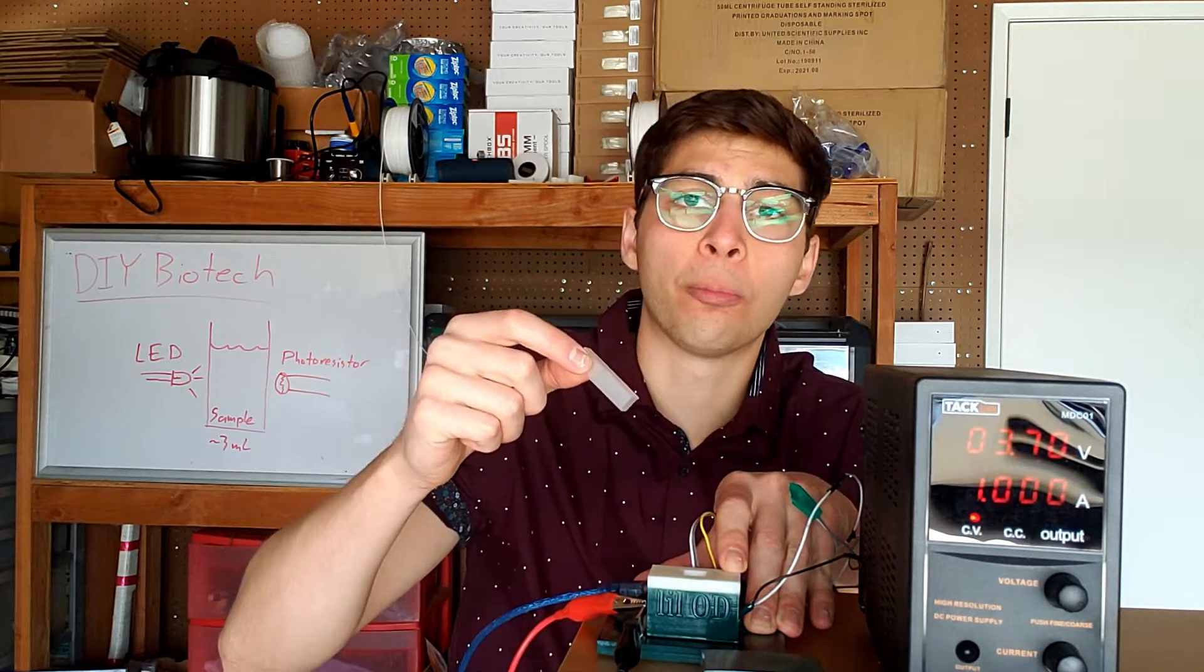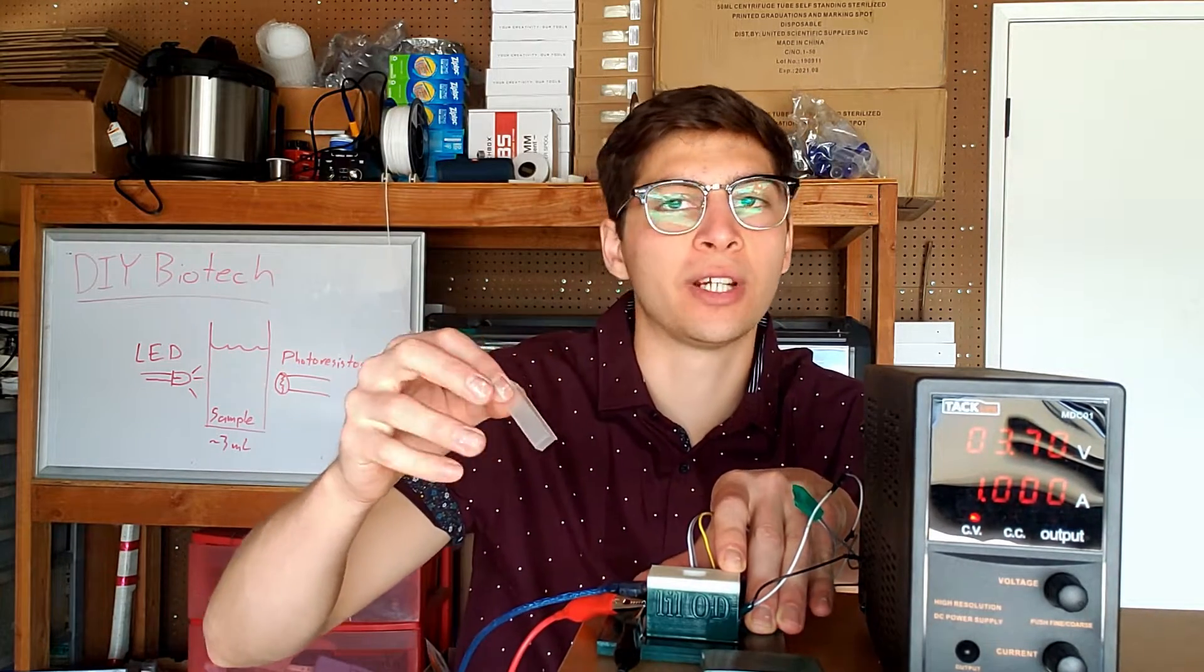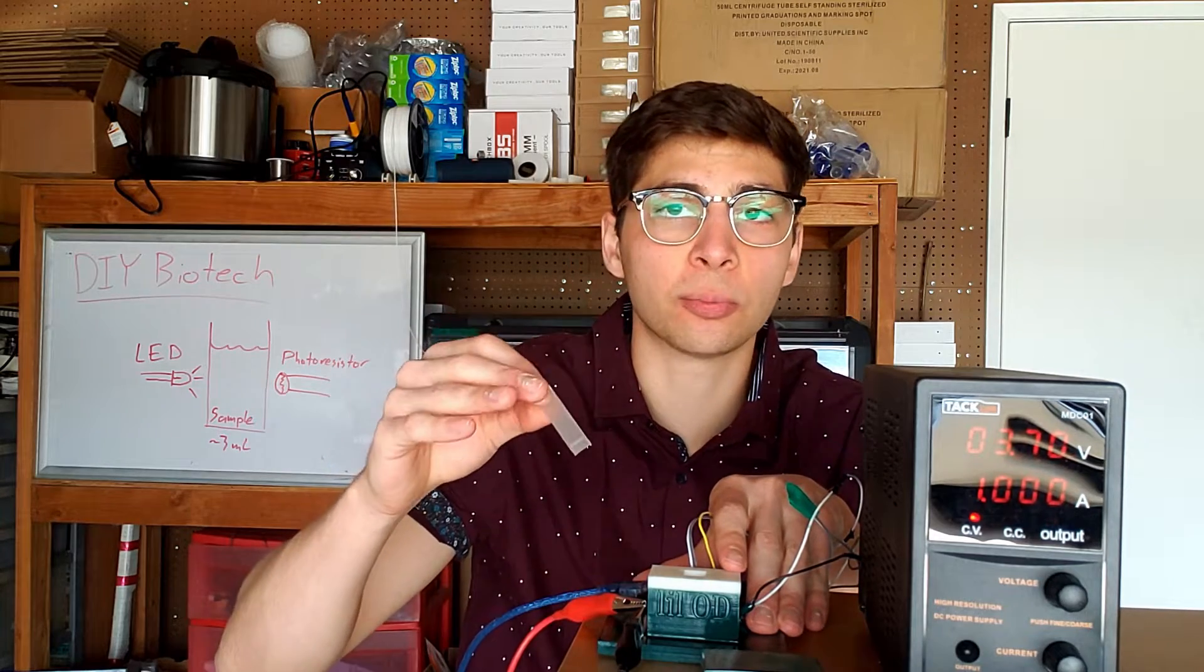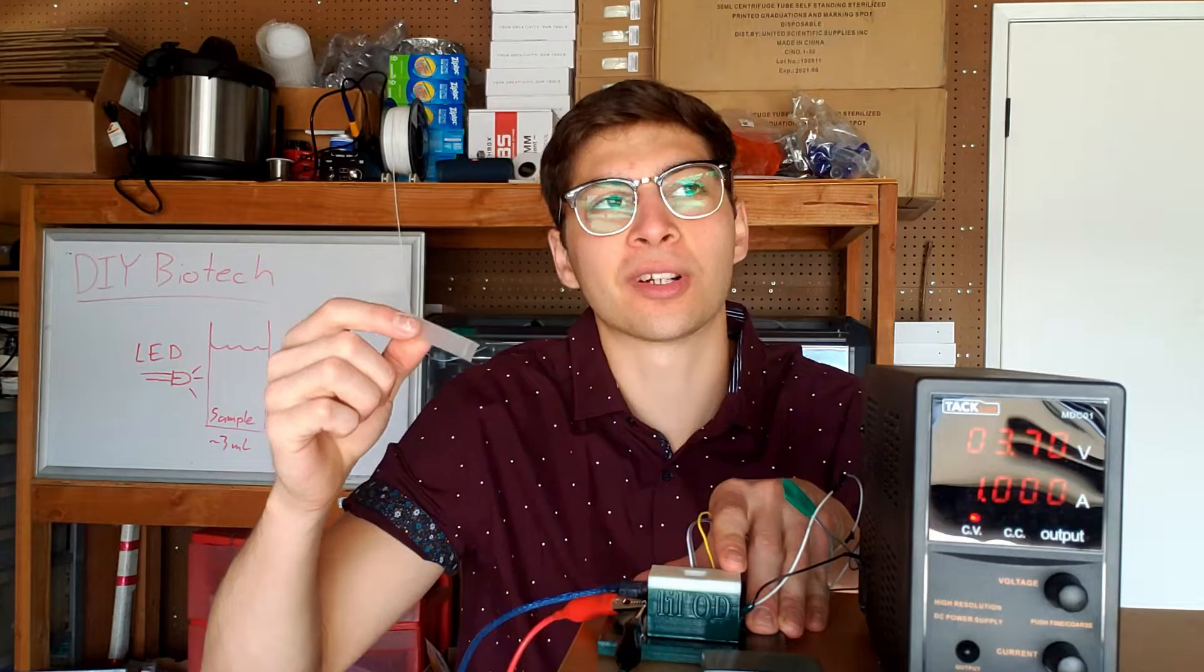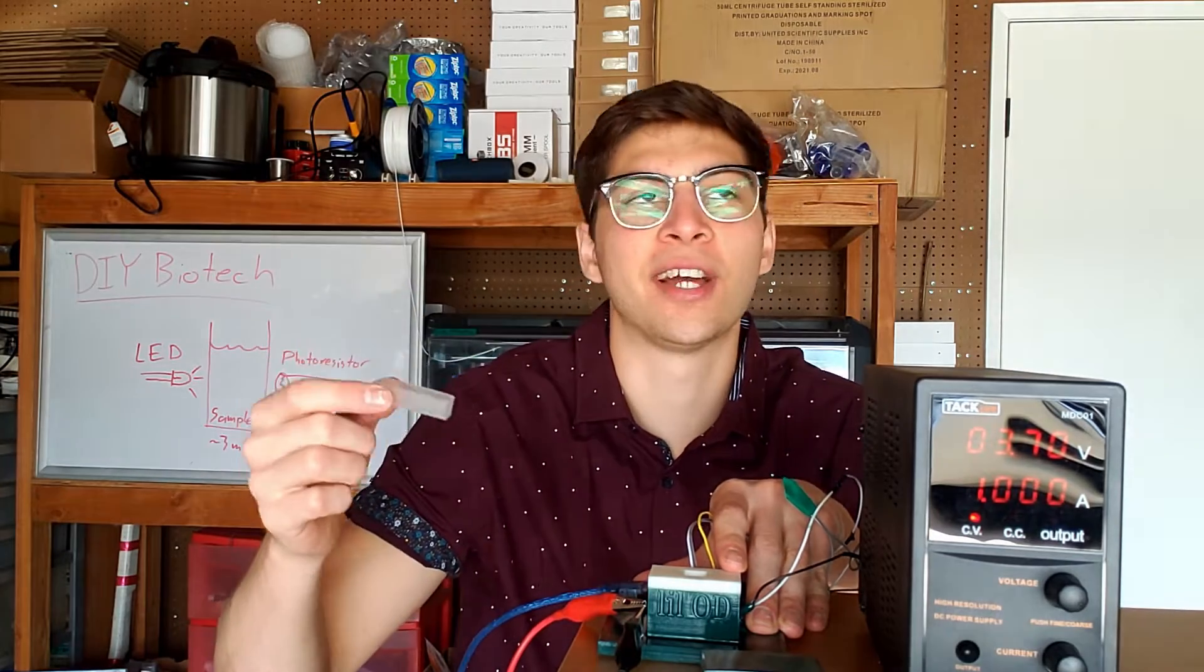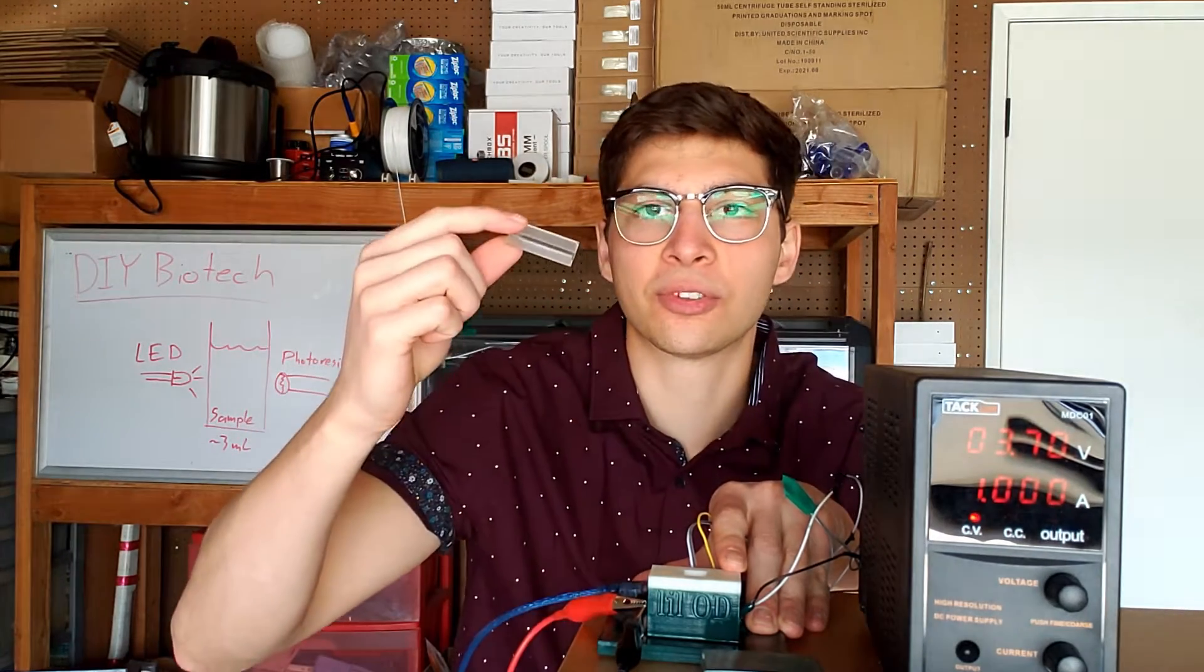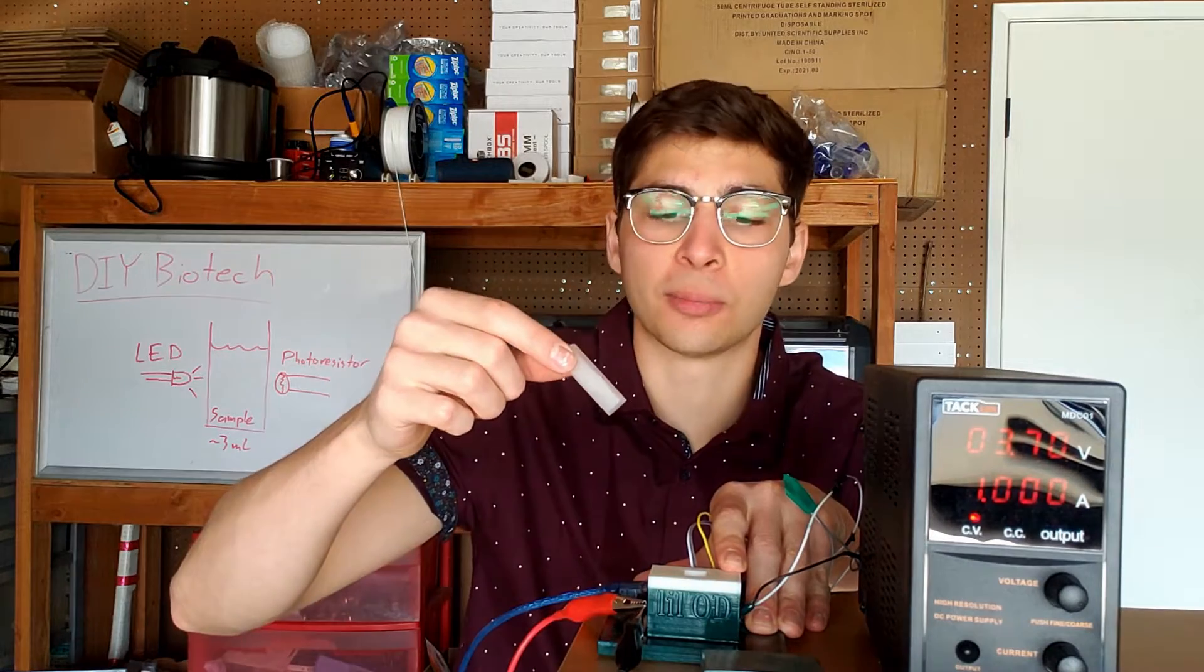However, plastic is opaque to UV light. So if you're measuring anything in the UV spectrum, you can't use plastic. You have to use a quartz cuvette, which is much more expensive. But to be fair, plastic cuvettes are only like 10 cents each or something like that. So quartz cuvettes are relatively expensive.